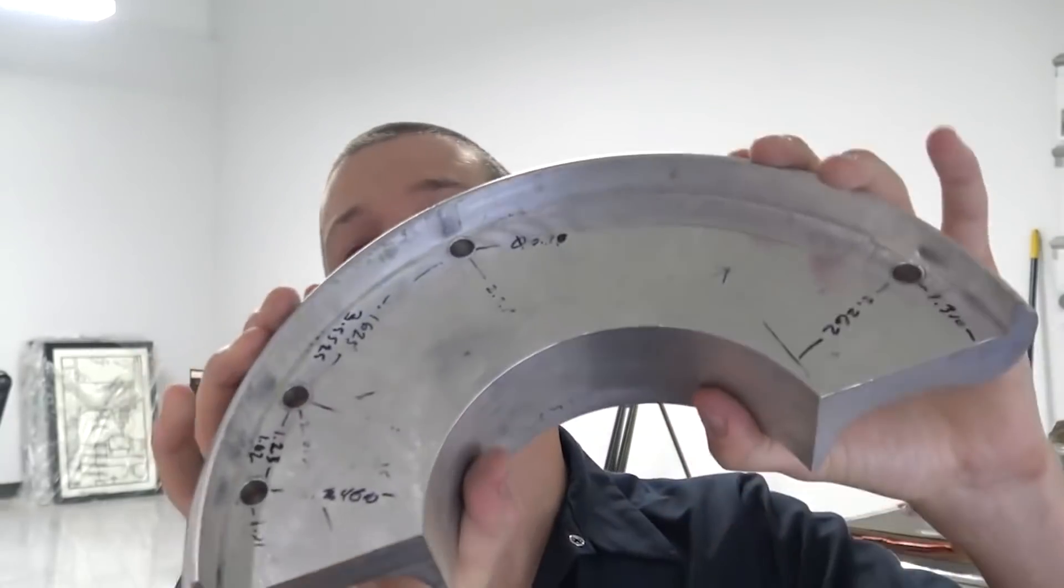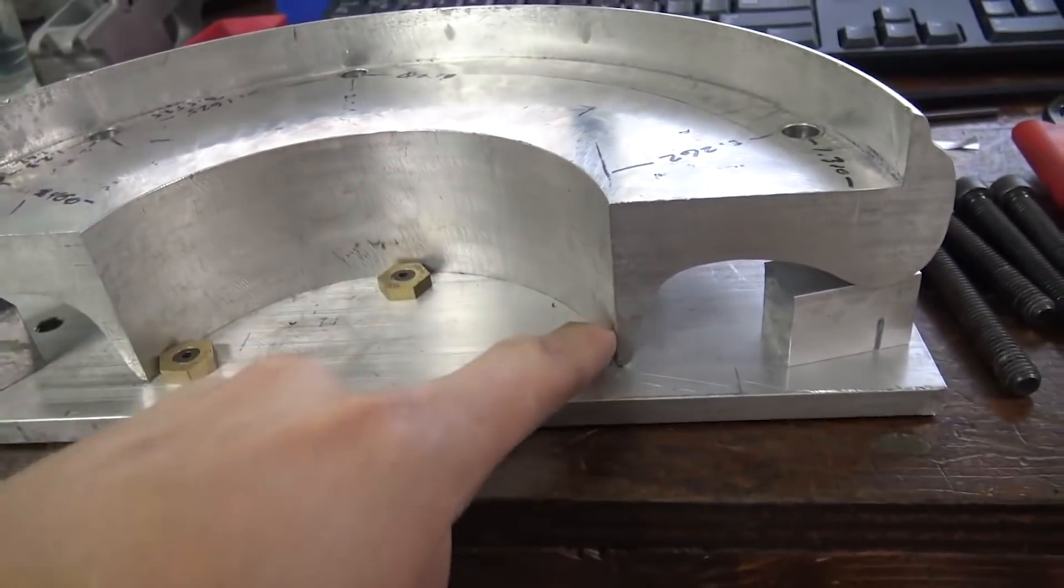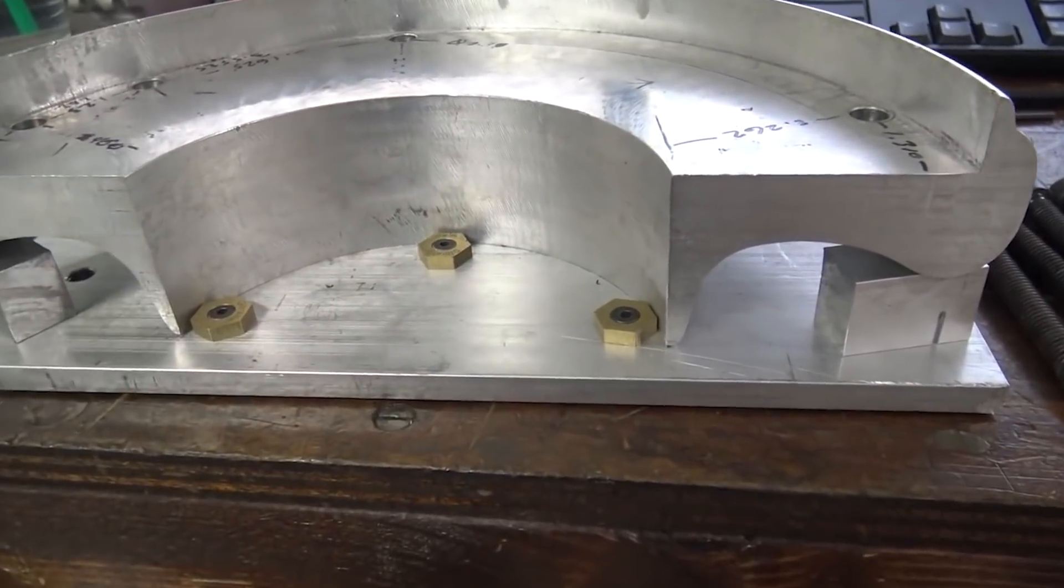Widget 111 we had this piece of, I believe it was an extrusion that the customer sent us, and they needed a significant amount of material removal done to it and there was just no obvious way to grab onto this part. So what do we do? We build a custom fixture.